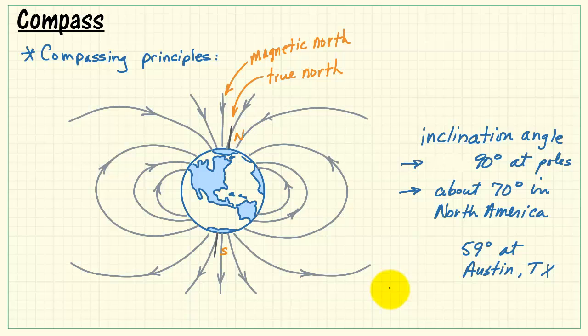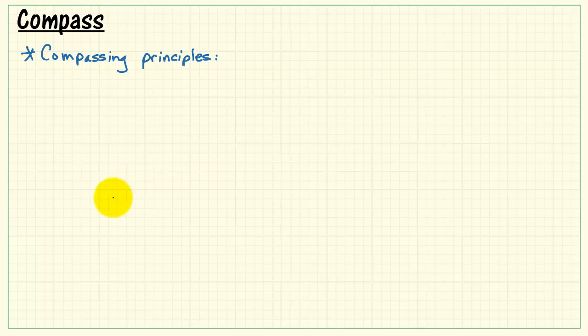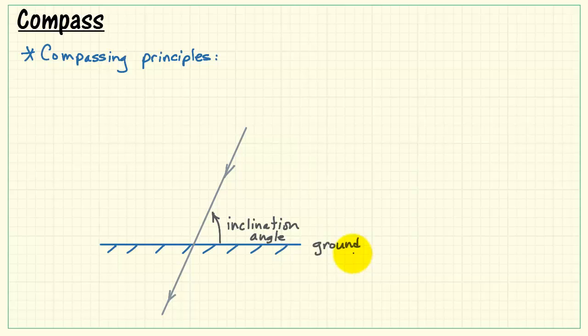And this inclination angle tells us that the field lines are mostly pointing into or out of the ground. Into the ground if you're in the northern hemisphere, out of the ground in the southern hemisphere.